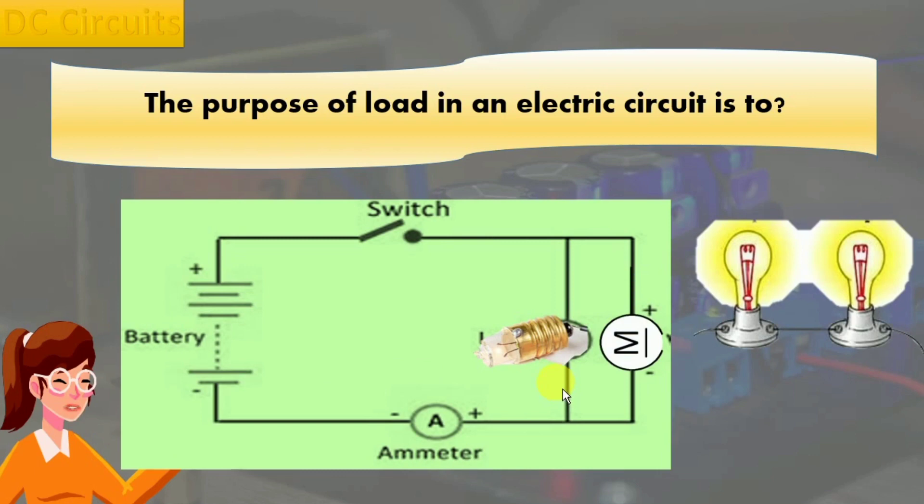Each load consumes electrical energy and transforms it into another type of energy. For example, a light bulb emits heat and light energy, while an electric motor works mechanically and generates heat. These loads are electrical devices or circuitry that use active electricity.